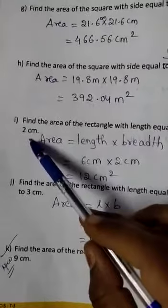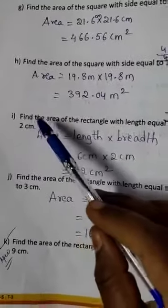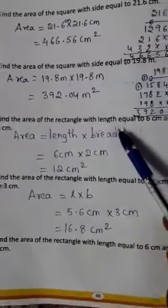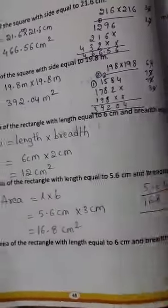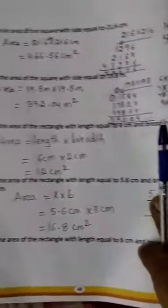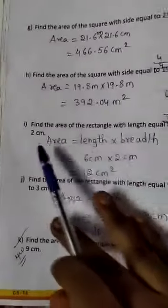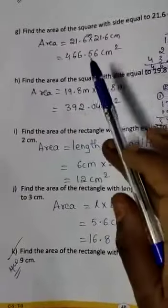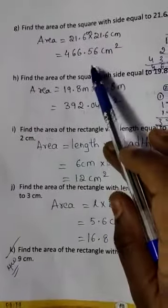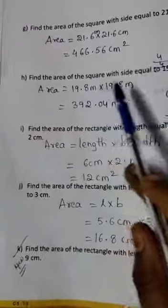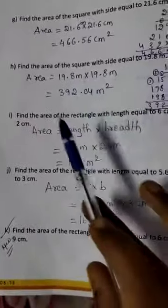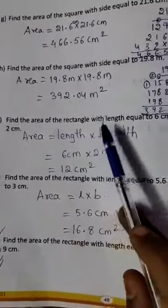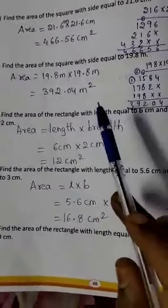So, let's look at this sum. Find the area of the rectangle with length equal to 6 cm and breadth equal to 2 cm. For the area of the square the formula was side into side. For the area of the rectangle the formula is length into breadth.